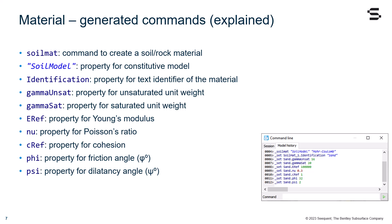Let's check them now, one by one, to better understand them. The soilmat is the command to create a soil or rock material. The SoilModel is the property for the constitutive model using a string. The Identification is the property for identifying the name of the material.